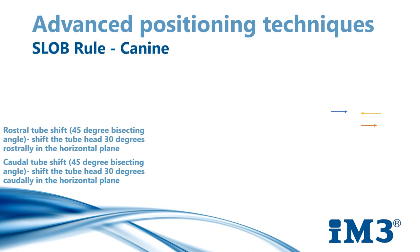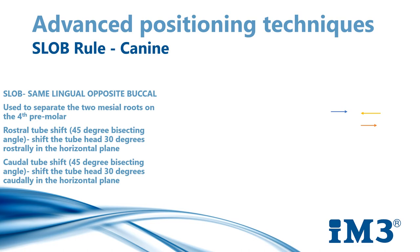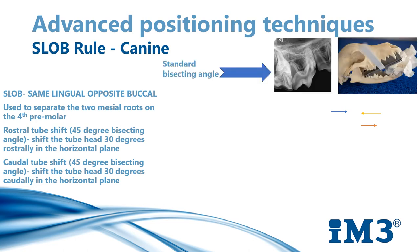The SLOB rule is used to separate the two mesial roots on the fourth premolar. When we image this tooth using a standard bisecting angle, the two mesial roots will appear superimposed. If we move the tube head in a more caudal or rostral direction, this will separate out the mesial roots; however, the standard 45-degree bisecting angle still remains the same. The tube head only needs to be rotated approximately 30 degrees rostrally or caudally in the horizontal plane. The root that moves in the same direction as the beam is the lingual or palatal root. The root that moves in the opposite direction to the beam is the buccal root.